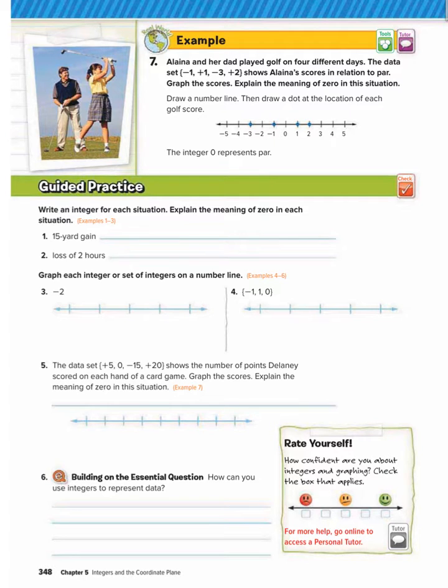So number one is a 15-yard gain. So as an integer, that would be a positive 15. But when we write positive numbers, we don't need to put the plus sign. We just write them as a regular number. Zero in this situation would mean no yards gained and no yards lost, if positive 15 means gain.